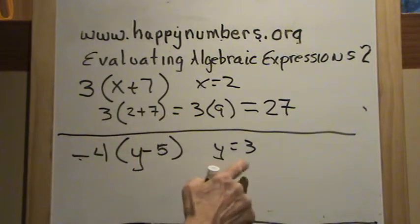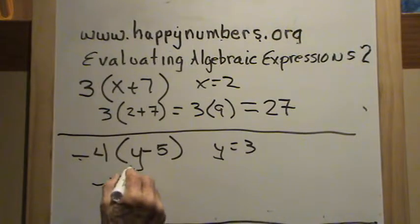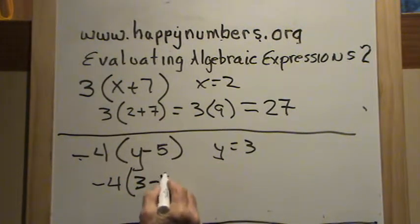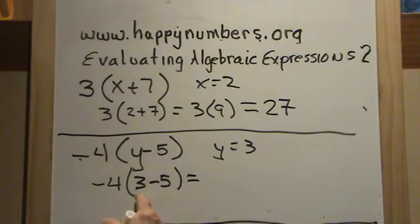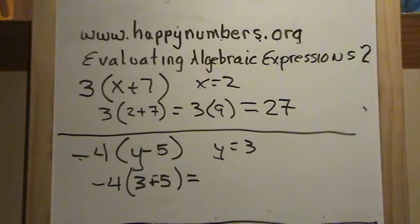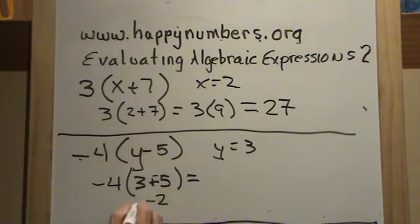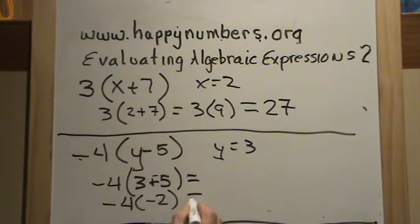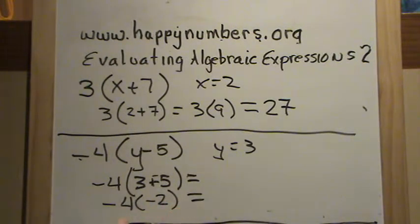For the second problem, we substitute: negative 4 times the quantity 3 minus 5. Now we do the parentheses. We are subtracting integers, so we add the opposite — this becomes negative 5, and the problem becomes addition. 3 plus negative 5 gives us negative 2. So now we have negative 4 times negative 2. A negative times a negative is a positive, so the answer is positive 8.